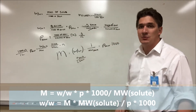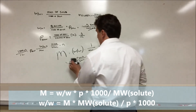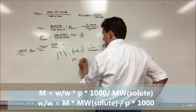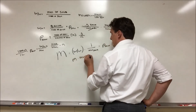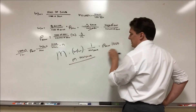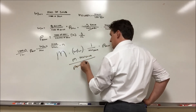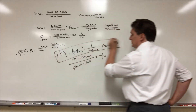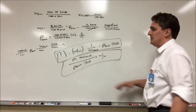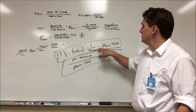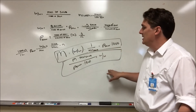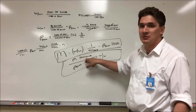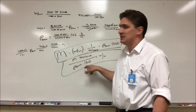Now if we want to go the other way — given molarity and we want weight fraction — all we do is rearrange. Take molarity, multiply by the molecular weight of the solute, and divide by the density of the solution times a thousand. This recovers the weight fraction. So these are your two relationships for converting between molarity and weight fraction: to go from weight fraction to molarity, divide by molecular weight and multiply by density times a thousand; to go from molarity to weight fraction, multiply by molecular weight and divide by density times a thousand.